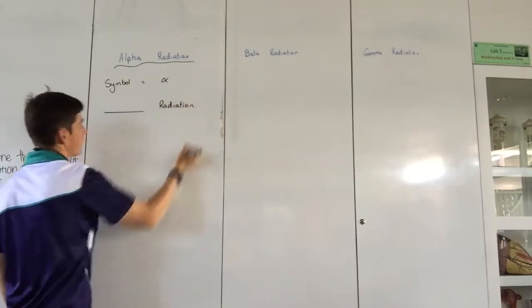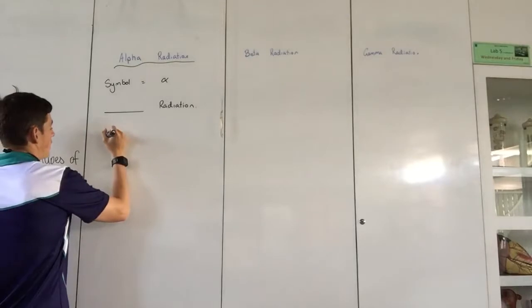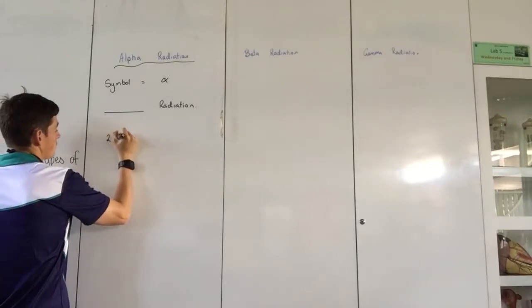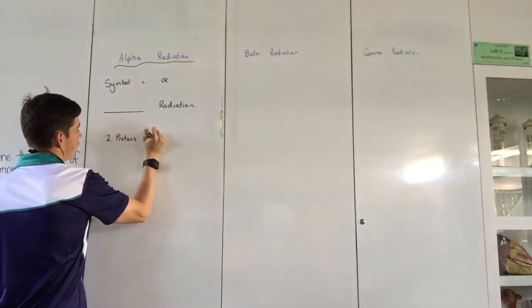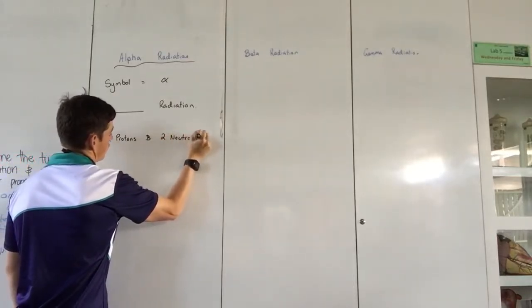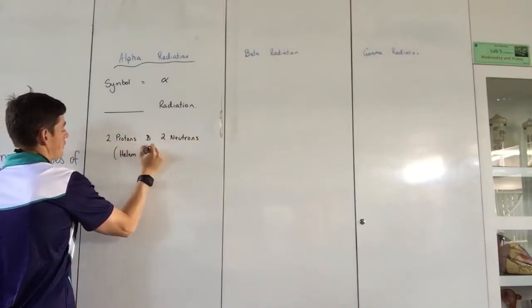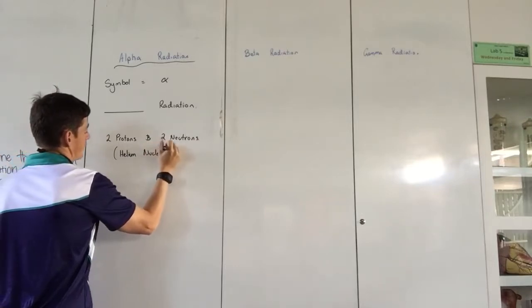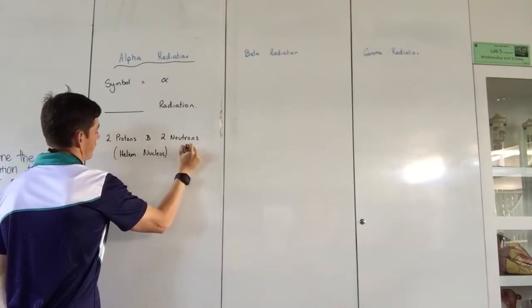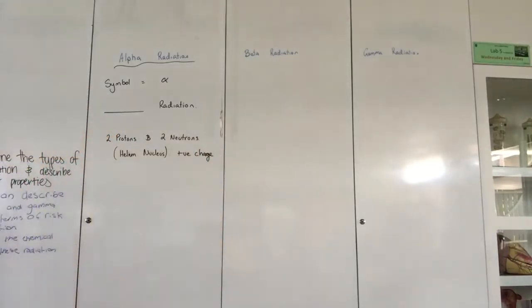There were two types we looked at yesterday. I'm going to let you decide what you think the type of radiation that it is. One starts with N, one starts with E, to give you a hint. And it is made up of two protons and two neutrons, which is the helium nucleus, which means it has a positive charge.